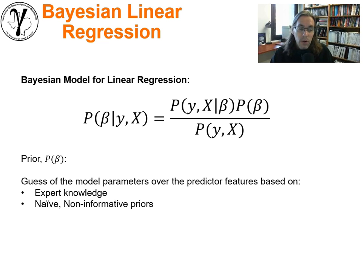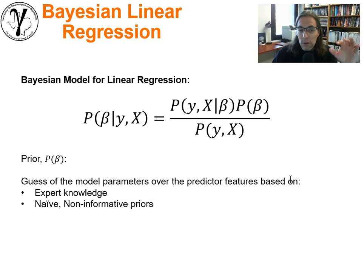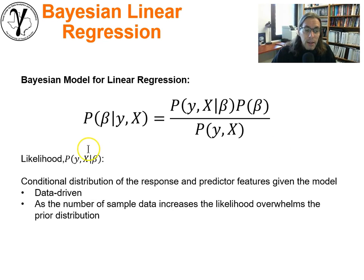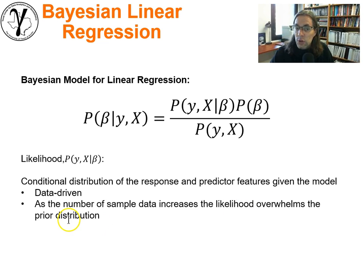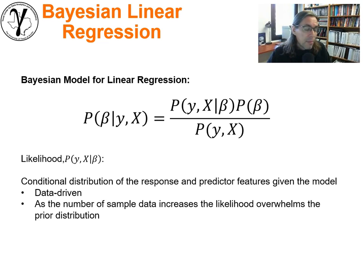The prior is a guess of the model parameters over the predictor features based on expert knowledge. Maybe you know something about the problem, some previous information. It could also be naive or non-informative. The likelihood term is the conditional distribution of the response and predictor features given the model — it's the data-driven part, the chance to update with new observations. In machine learning terms, that's our training data and its impact upon the model. As the number of sample data increases, the likelihood will become more precise, its uncertainty will shrink, and it will overwhelm the prior distribution at some point. Conversely, a prior with very small variance could overwhelm the likelihood term. They're two competing sources of information.